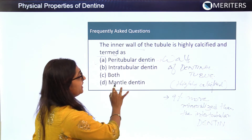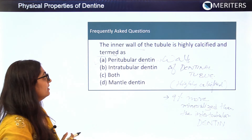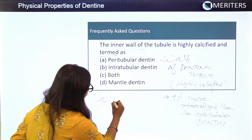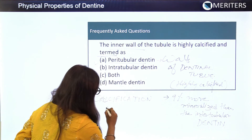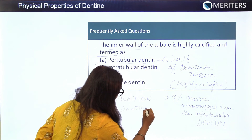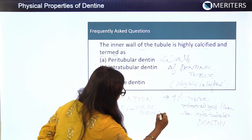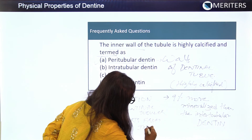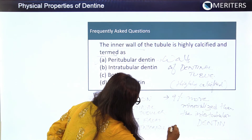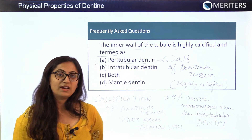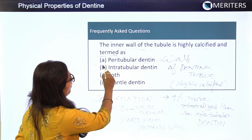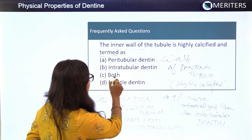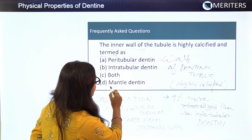Intratubular dentine is another name for peritubular dentine, because the calcification of dentinal tubules starts from the internal wall. So peritubular dentine and intratubular dentine are synonymous — they are the same terms. Both options refer to the same thing, making them correct answers for the highly calcified inner tubule wall.